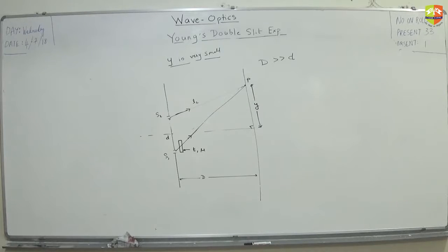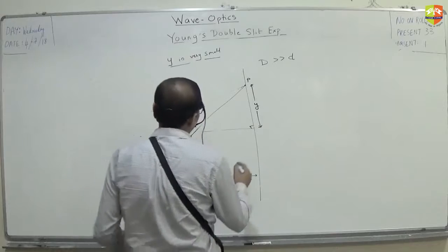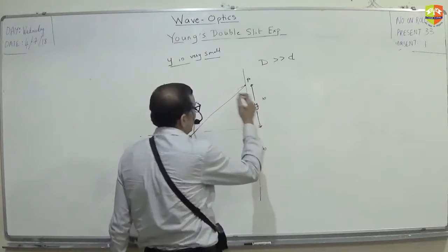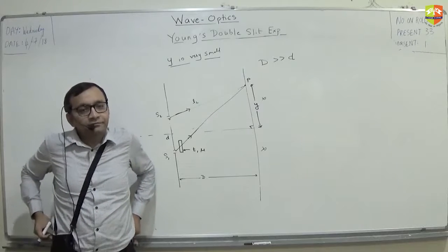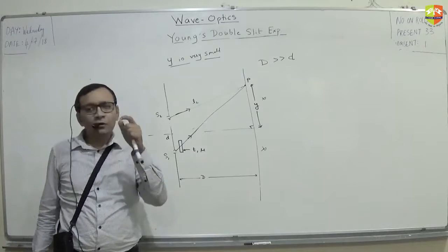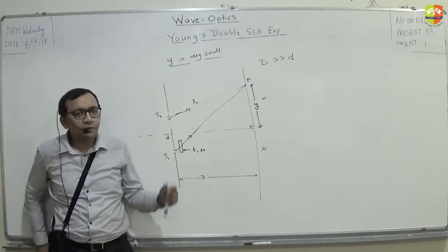Tell me one thing. The formula is mu minus 1 into t equal to lambda by something. Tell me, will the central bright fringe be above or below? Why? Don't go by formula — tell me as an explanation why it should be below.